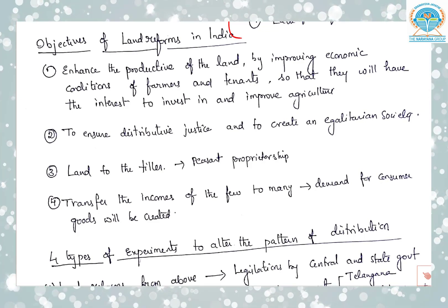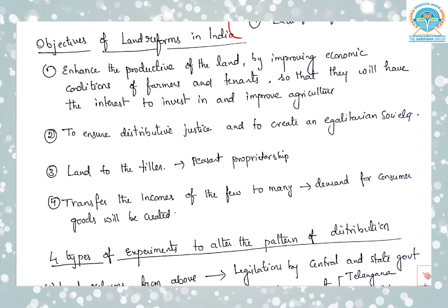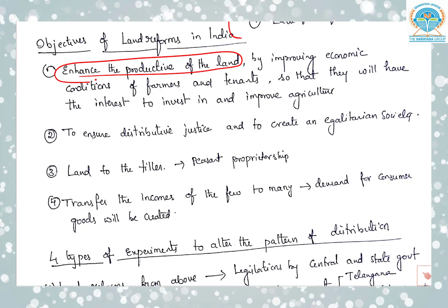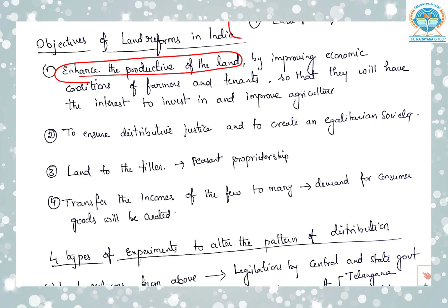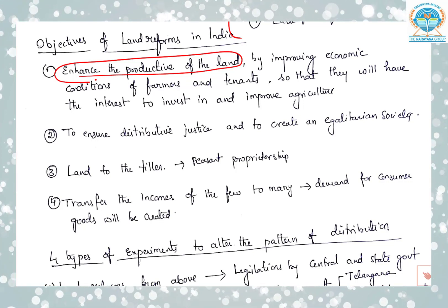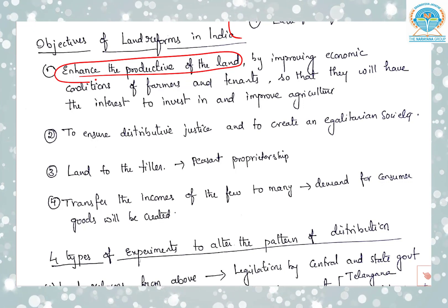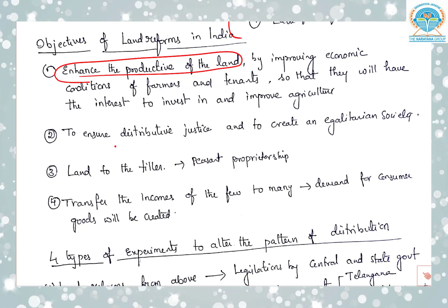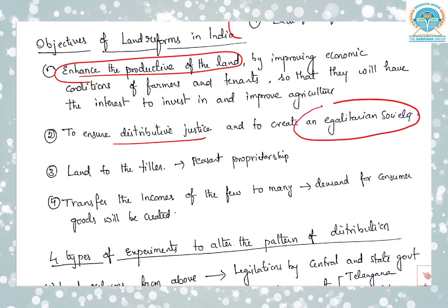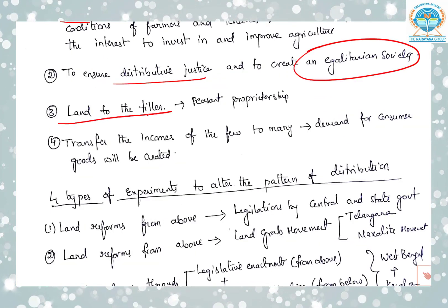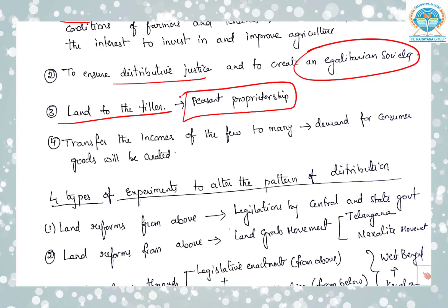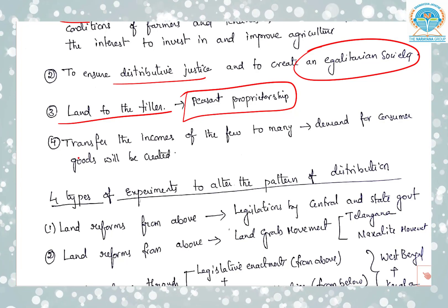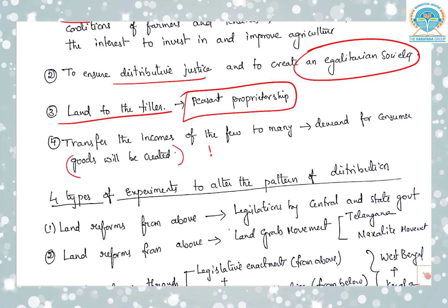What are the objectives of land reforms in India? The main objective is to enhance the productivity of the land by improving economic conditions of farmers and tenants so that they will have the interest to invest in and improve agriculture. Other objectives include: ensuring distributive justice and creating an egalitarian society, land to the tiller — that is present proprietorship — and transfer of incomes from the few to many, which may lead to demand for consumer goods and finally growth in the GDP.